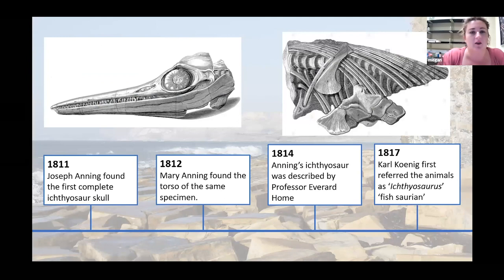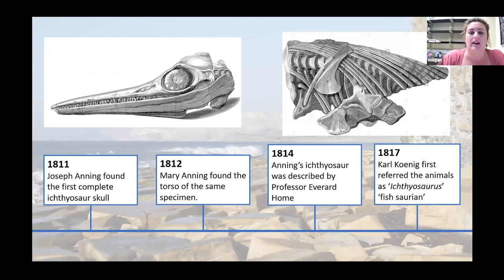It wasn't until 1811 that Joseph Anning found the first complete ichthyosaur skull, and in 1812 Mary Anning found the torso. This is the first ichthyosaur skeleton to be actually identified as such - it was originally described as 'ichthyosaurus' or 'fish saurian' and is now described as Temnodontosaurus.